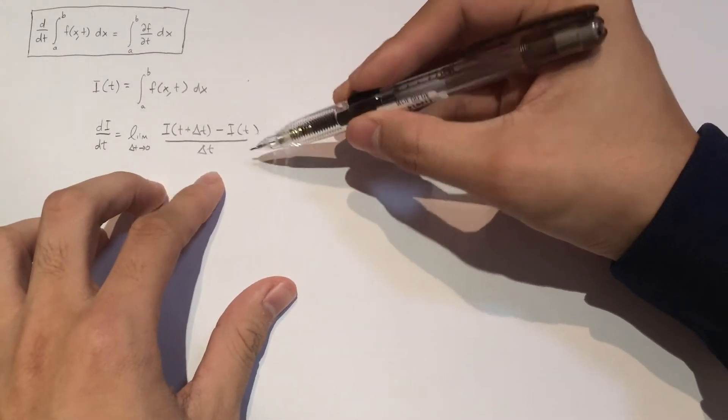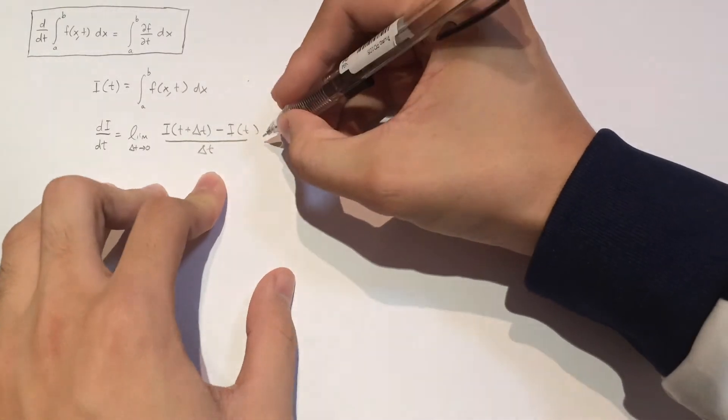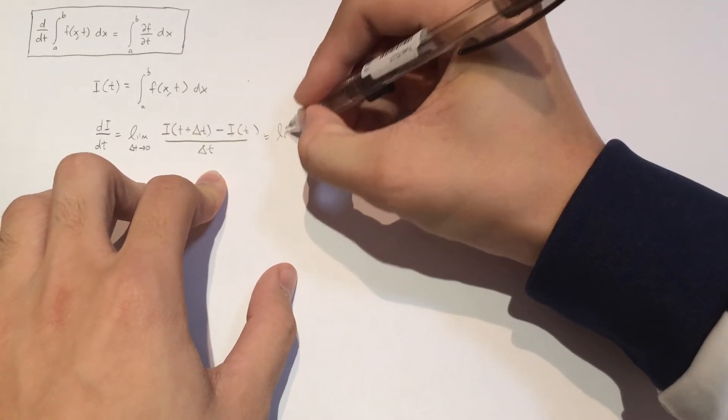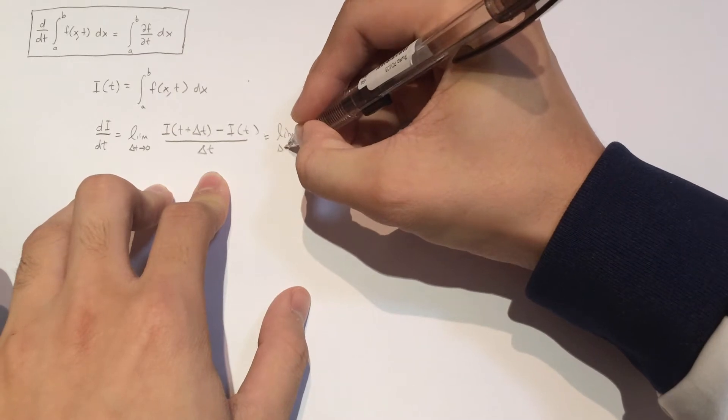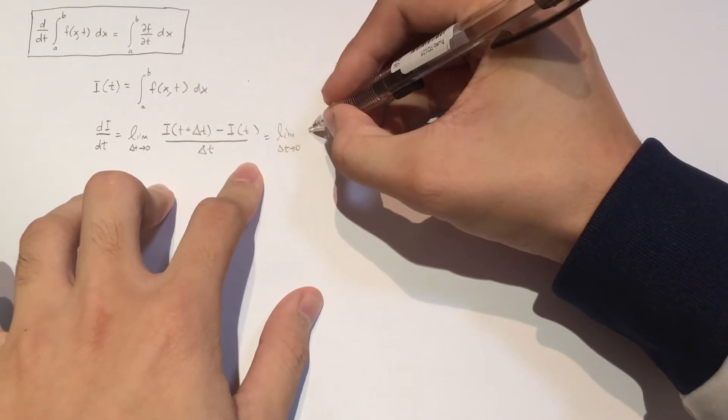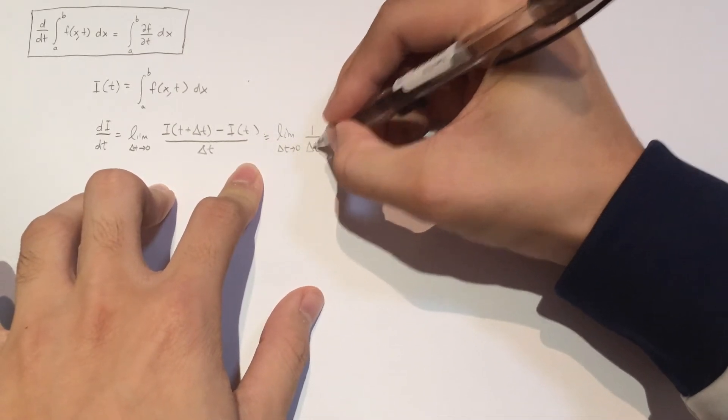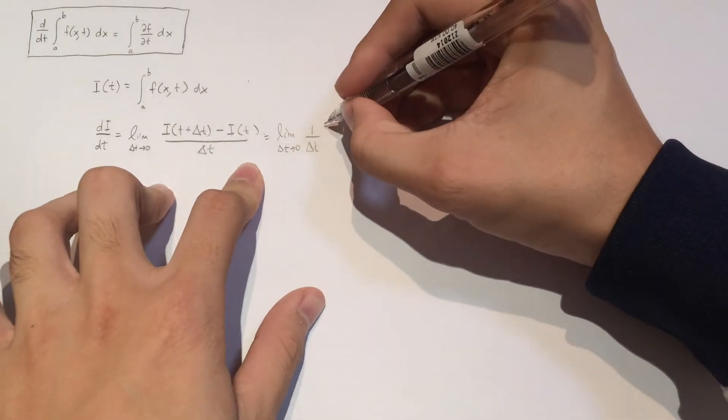And so now let's try to find out what this bit equal to. So I'm just going to keep the limits, right? Obviously, you need to keep the limit. I'm going to move the one over delta T outside so we can write it a bit easier, right?